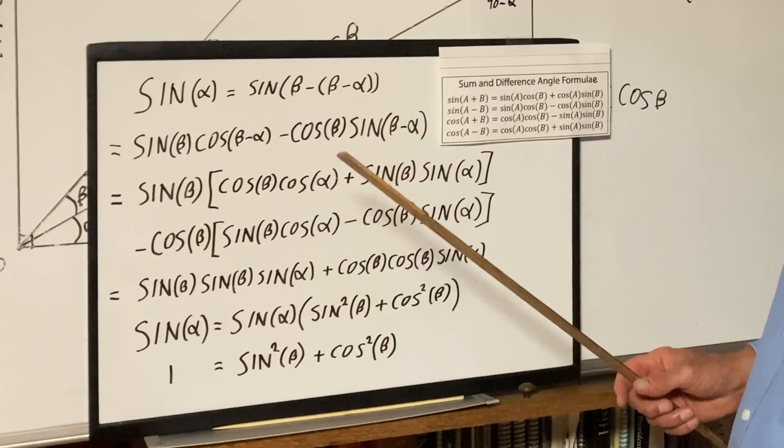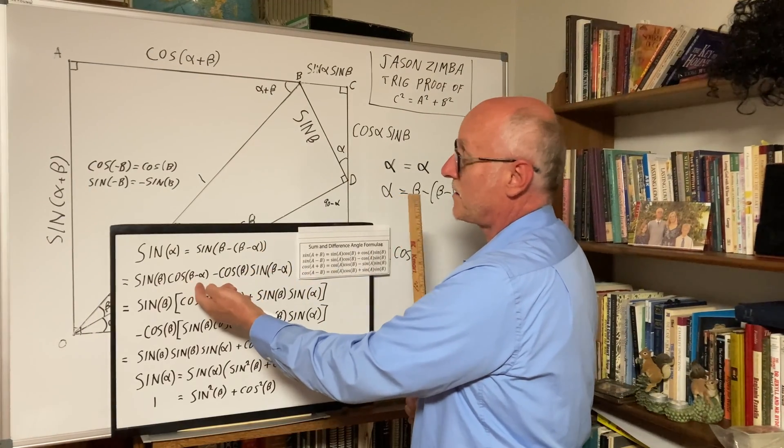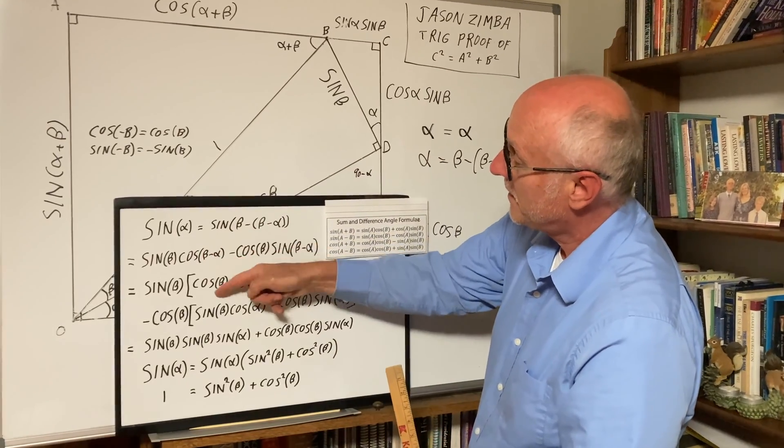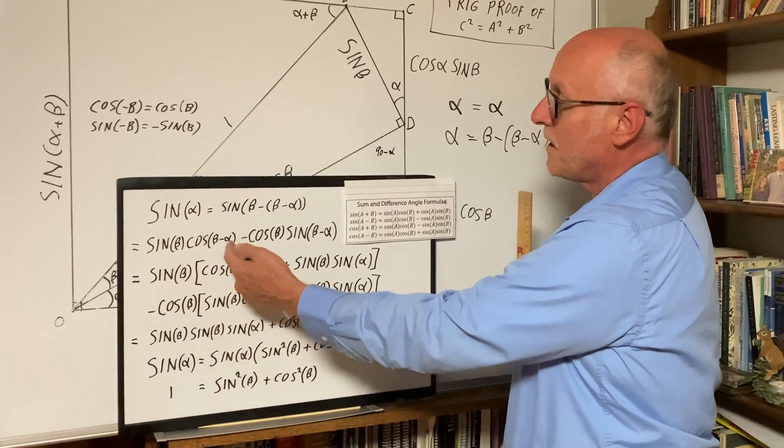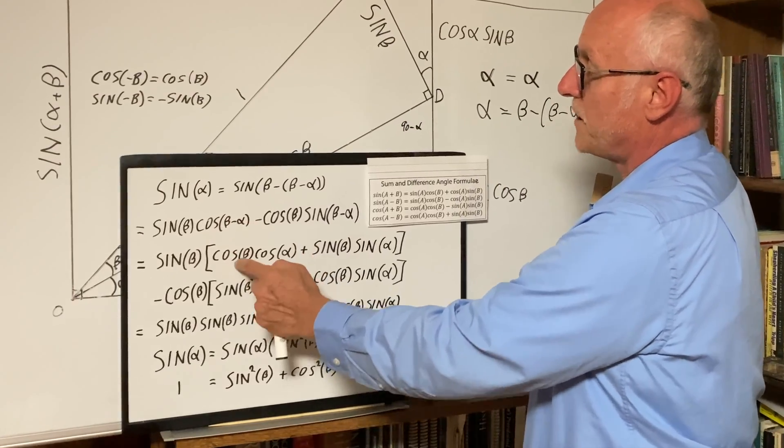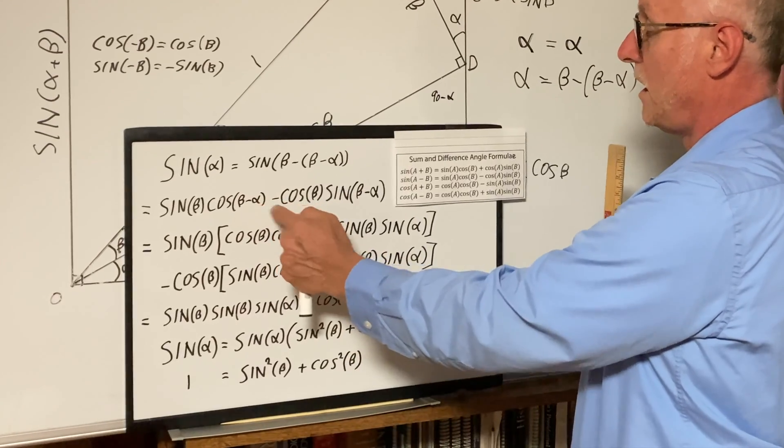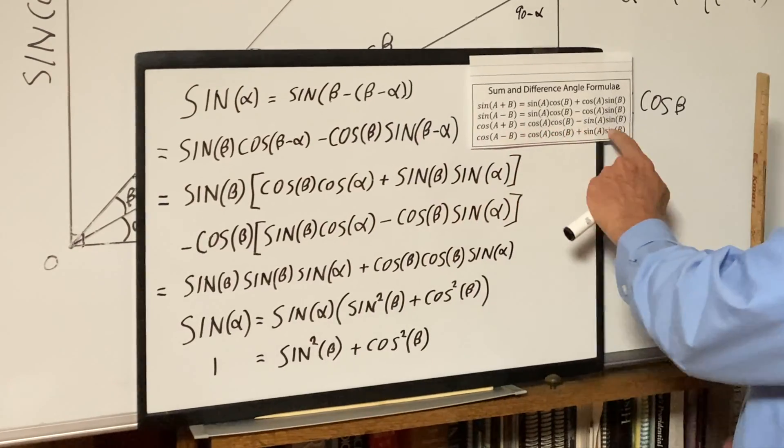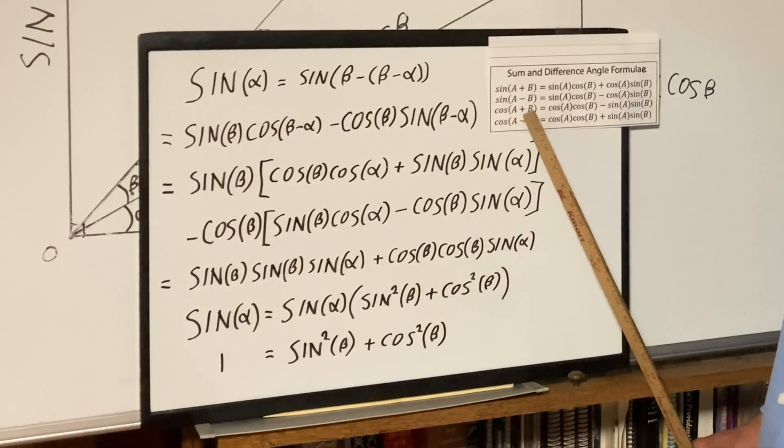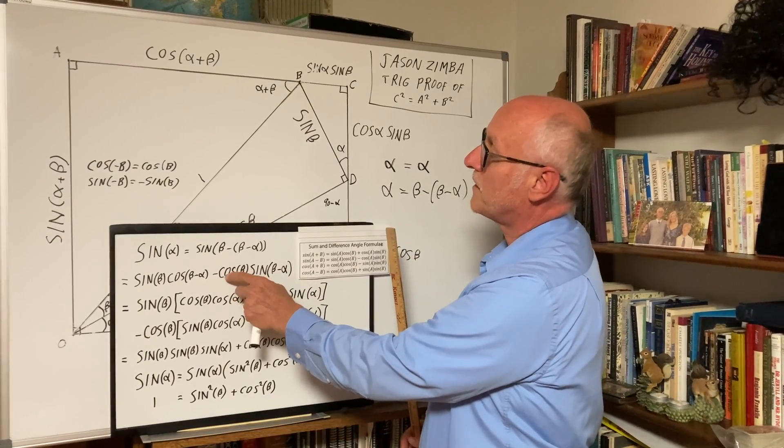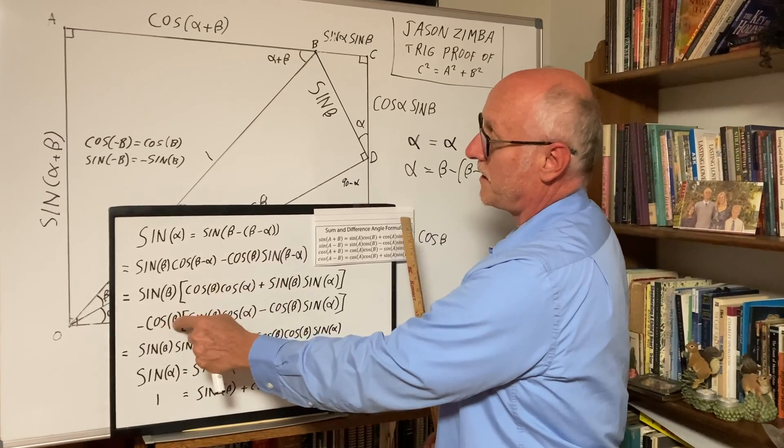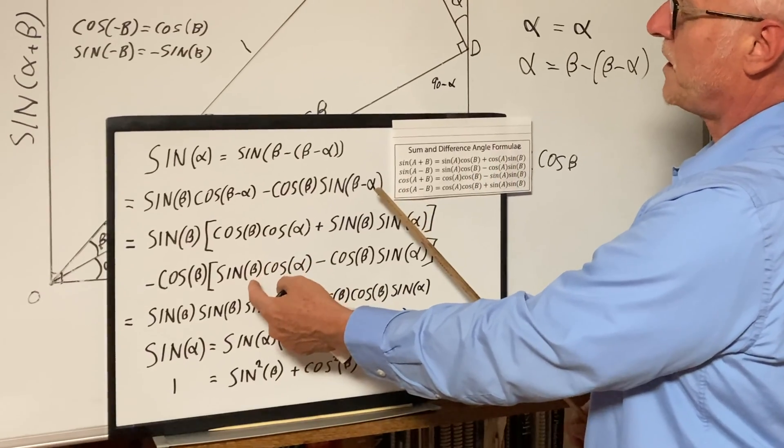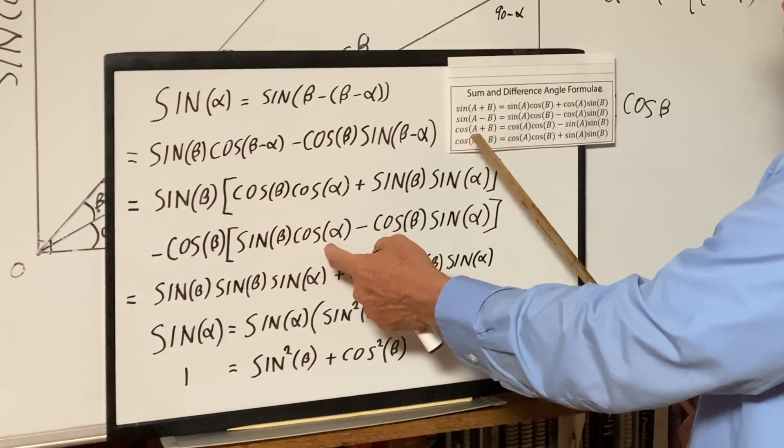Now we take it further. This is another difference angle formula, cosine difference angle formula, and so we expand these as follows. Sine beta, and then cosine beta minus alpha becomes cosine beta cosine alpha plus sine beta sine alpha, and that follows from our difference angle formula for cosine. Minus cosine beta, and we expand sine beta minus alpha, sine beta cosine alpha minus cosine beta sine alpha.